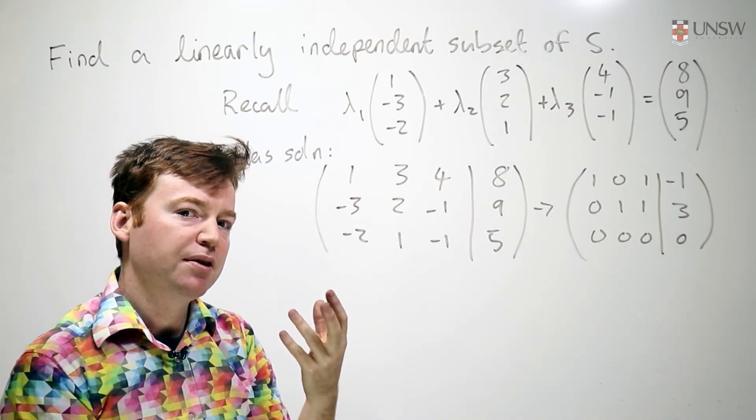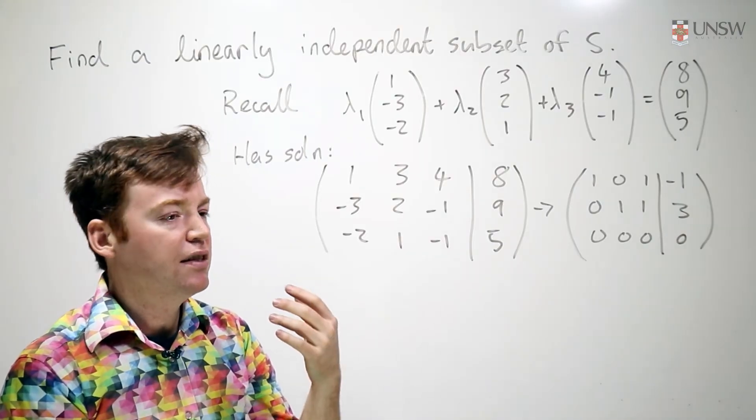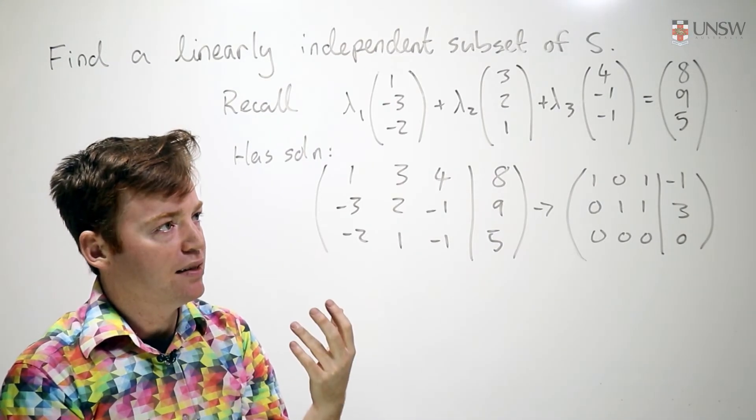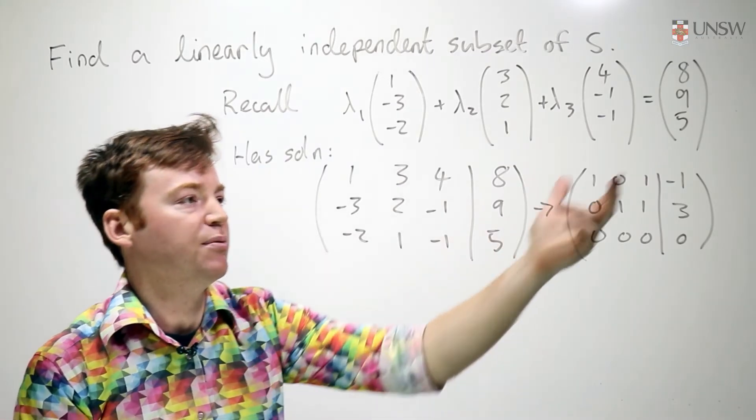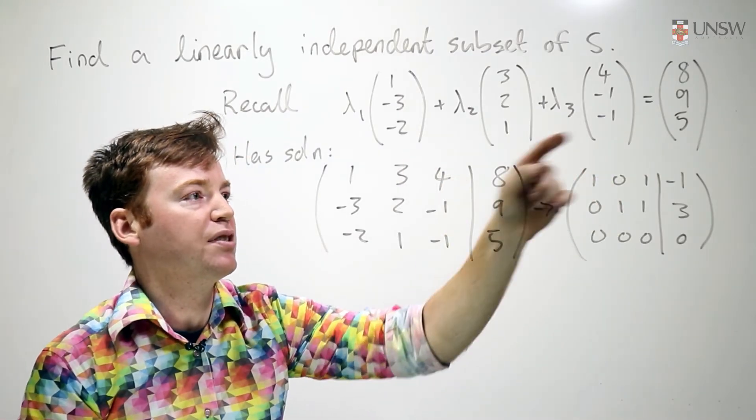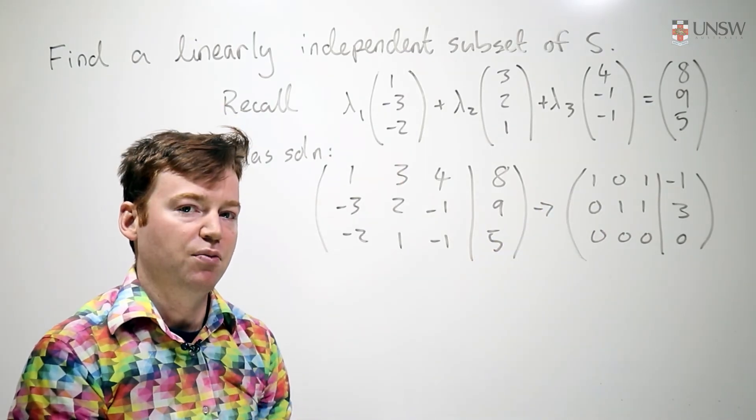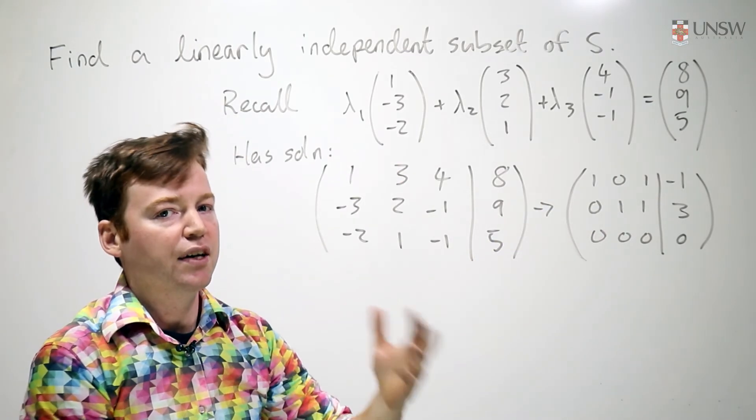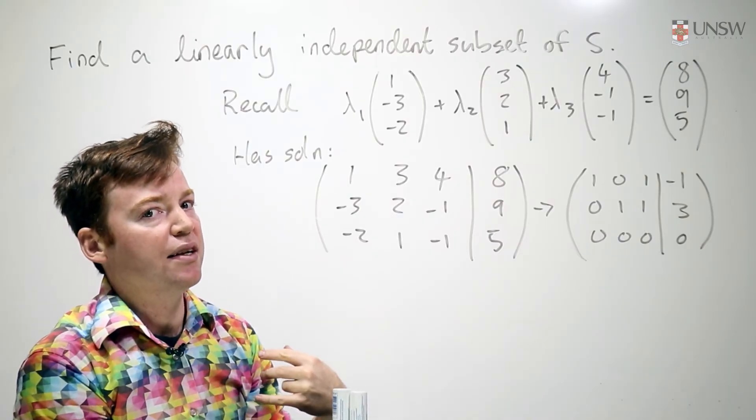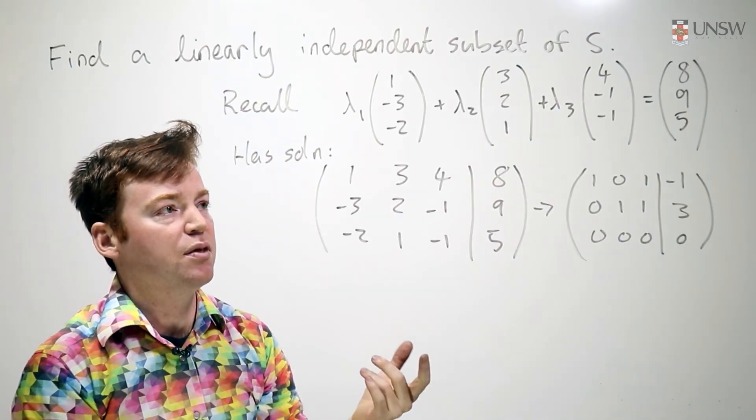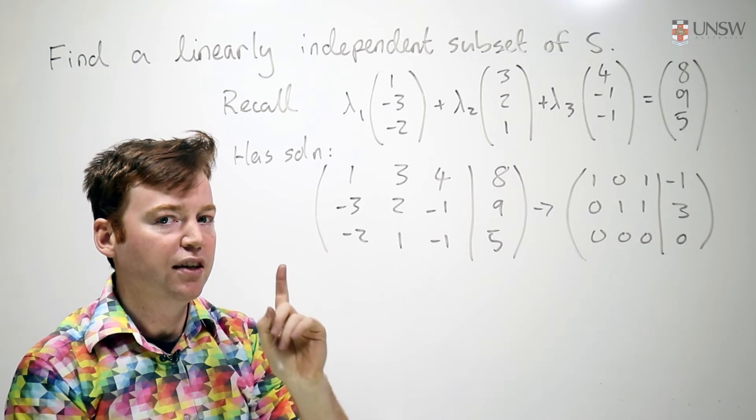Remember the intuition we built up in part C. The vectors are linearly dependent when you take an element of the span and you can express the element of the span in many ways, in many different ways. On the other hand, they're linearly independent when you can express an element of the span in one way, in one unique way.